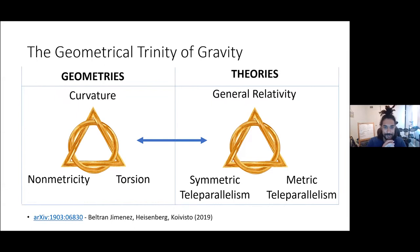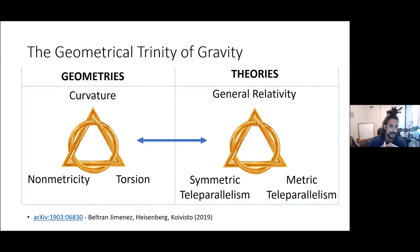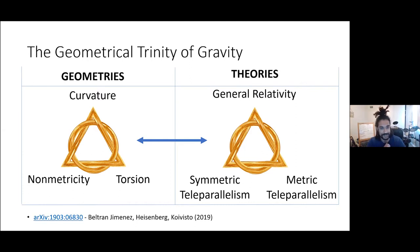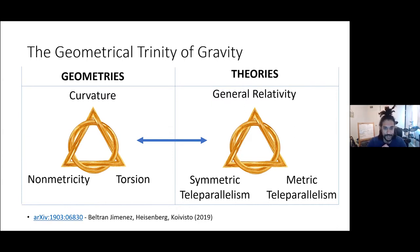What has been realized fairly recently — in the past three years — is that there's this quote-unquote geometrical trinity of gravity. You can have curvature, torsion, and non-metricity, and it turns out there are three different theories that have these different geometries. General relativity has curvature but no torsion and no non-metricity. It turns out you can get different theories that have different geometry yet have the same vacuum dynamics. Metric teleparallelism has torsion but no non-metricity and no curvature, and there's also symmetric teleparallelism that has non-metricity.